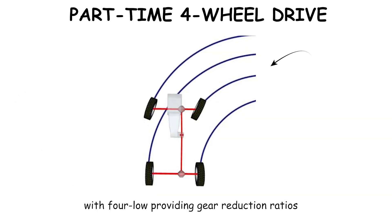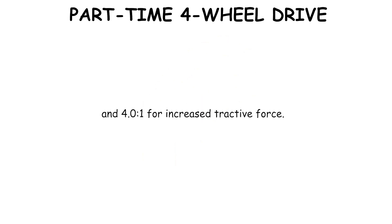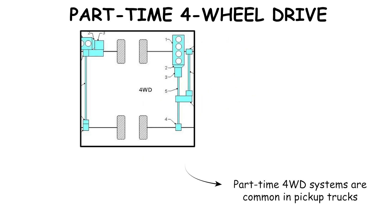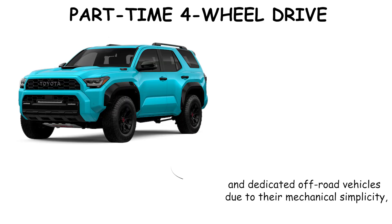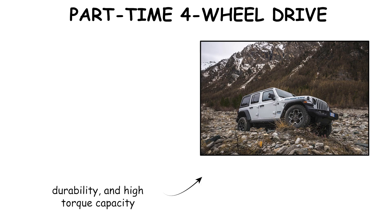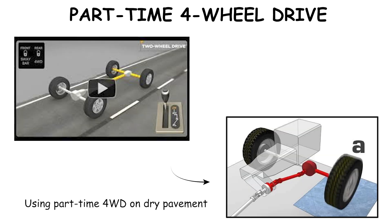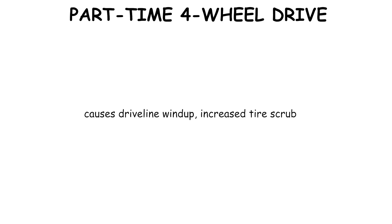Engagement modes usually include two-high, four-high, and four-low, with four-low providing gear reduction ratios commonly between 2.5 to 1 and 4 to 1 for increased tractive force. Part-Time Four Wheel Drive systems are common in pickup trucks and dedicated off-road vehicles due to their mechanical simplicity, durability, and high torque capacity.